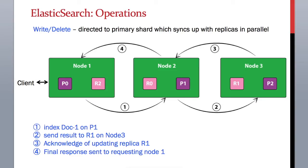Node 1 will forward the write operation received from the client to node 2 to process it. Node 2 will store the document on shard P1 and in parallel also send sync requests to all its replica shards.